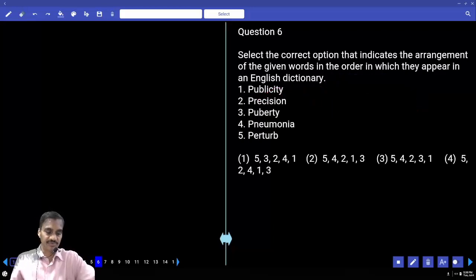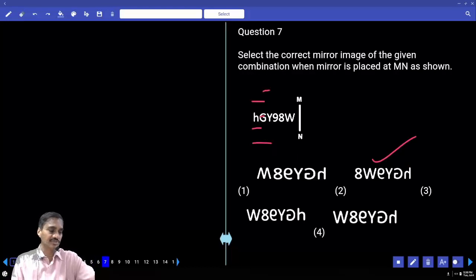Question six: find the order in which they appear in a dictionary. First P-E comes first, after E next is N, that is 5, 4. Next is 2, 3, and 1. So 5, 4, 2, 3, 1 - choice three.